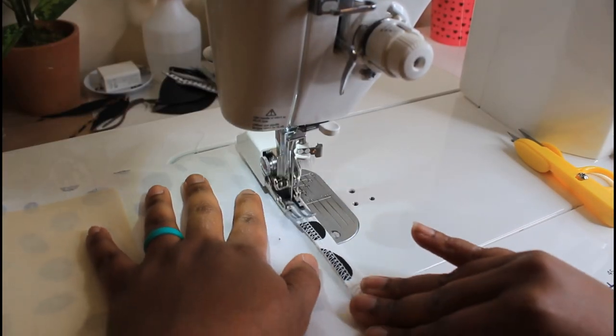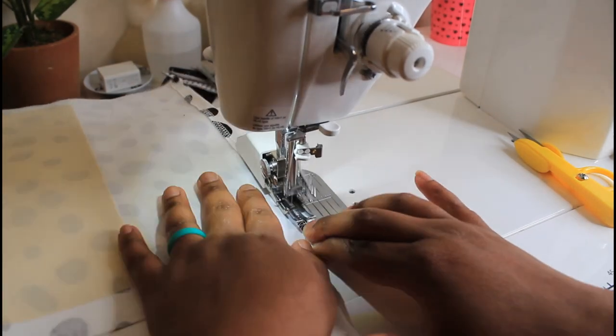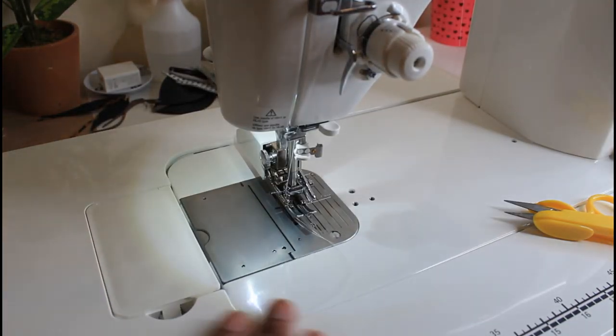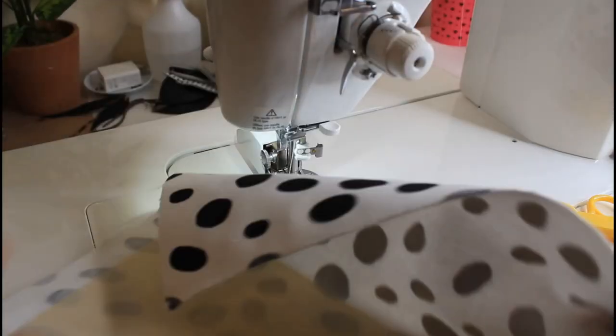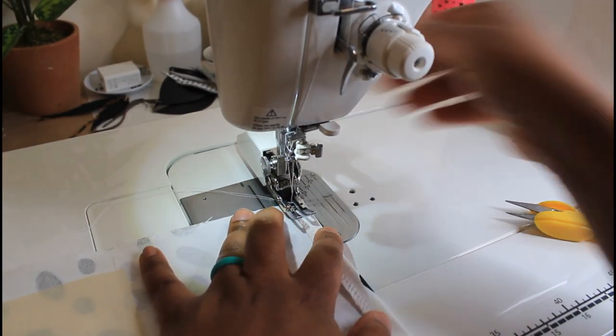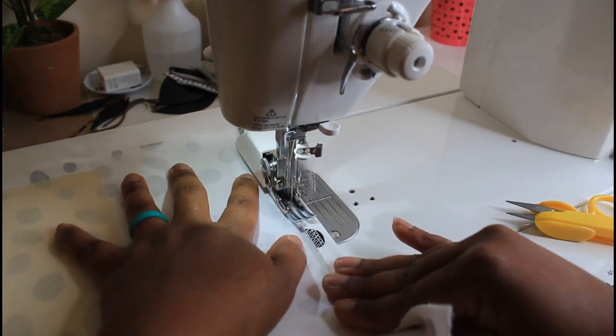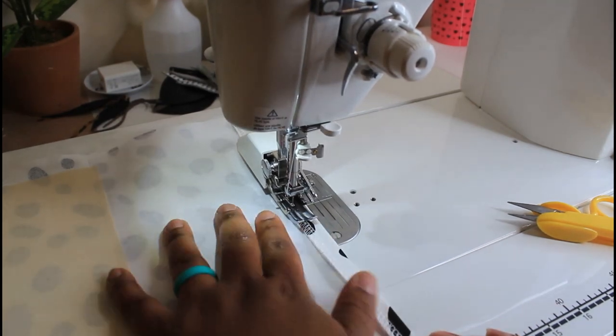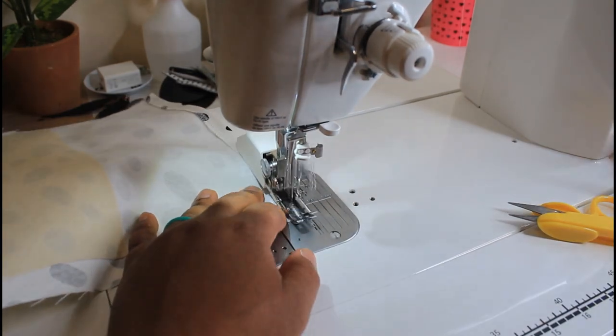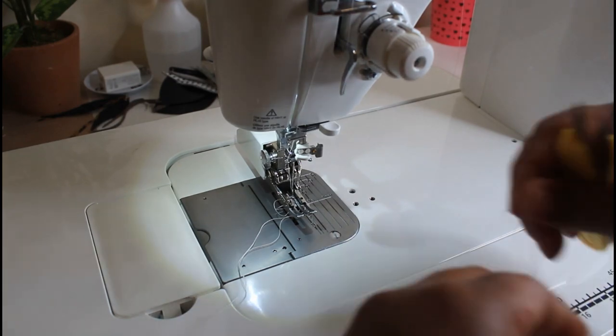Alright guys so I do want to note here that according to the pattern we are going to be basically using a 5/8 seam allowance throughout the pattern except for when we are sewing up the seam on our outer fabric and on our lining fabric. So in those instances we are going to be using a 3/8 inch seam allowance, so on the outer edges of the outer fabric and on the outer edges of the lining fabric, and also when we are sewing across the top to tack those outer edges down or outer flaps down, that's when we are going to use the 3/8 seam allowance.